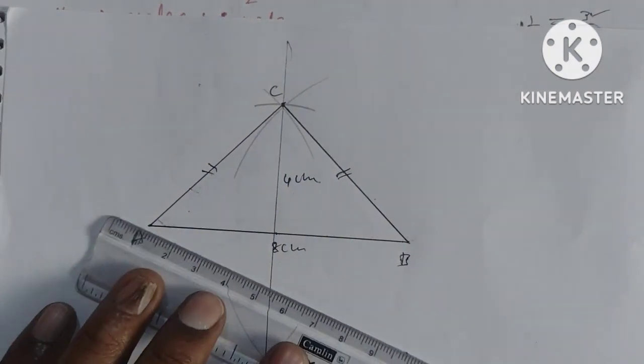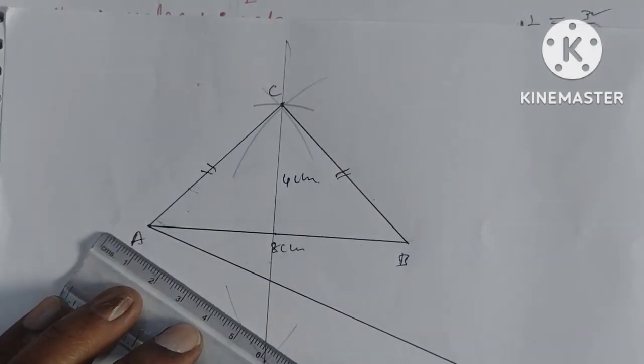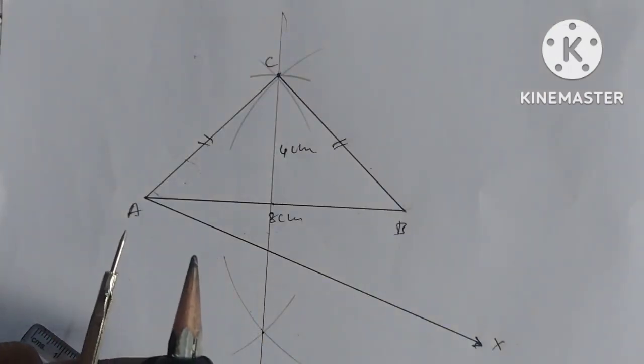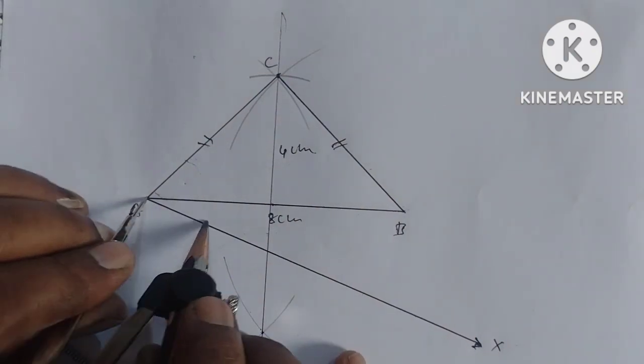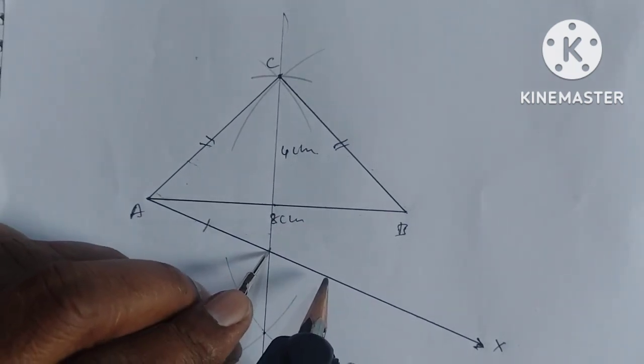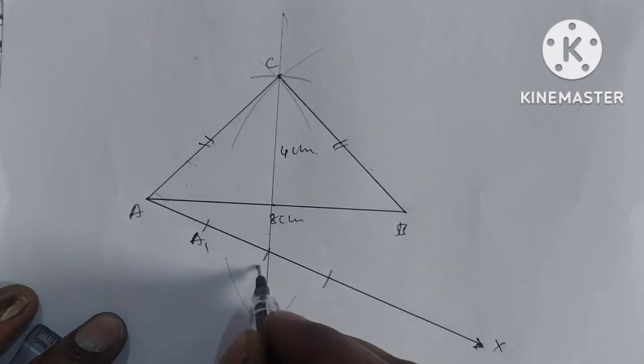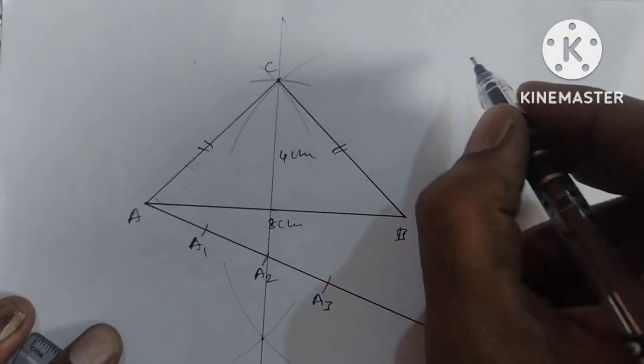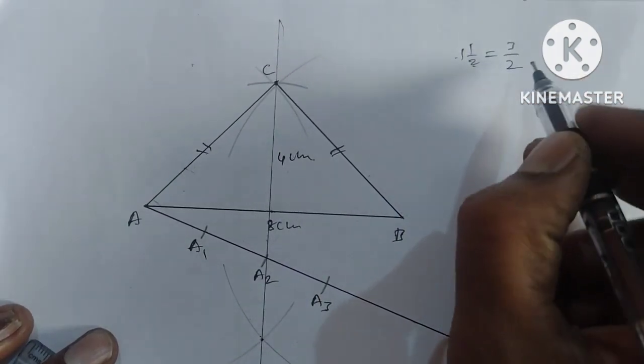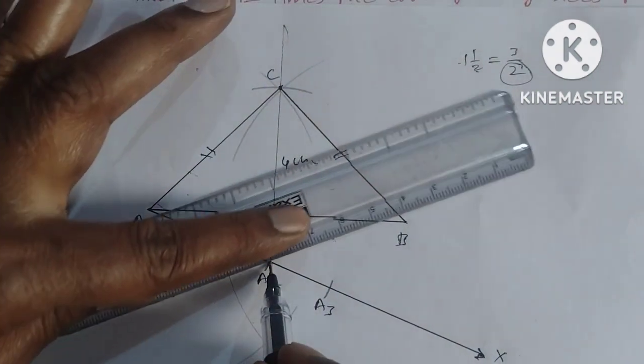Now we draw a ray from A at an acute angle. Using a compass, we mark 3 equal parts: A1, A2, A3. We need a ratio of 3/2, which has denominator 2, so we draw the denominator value.